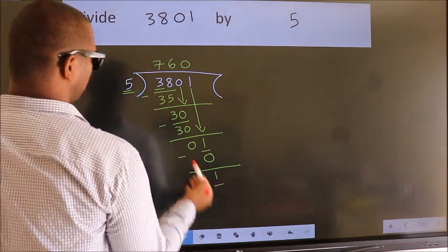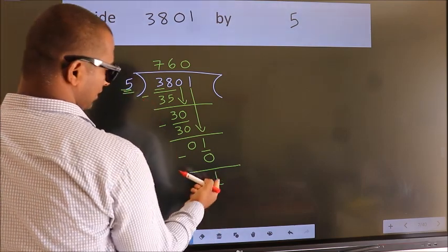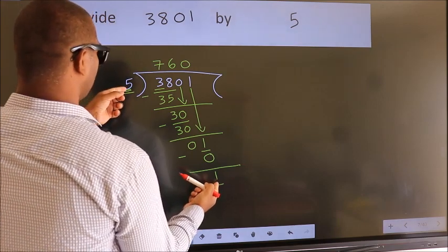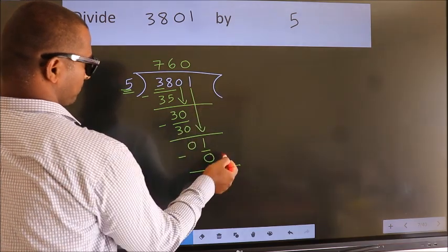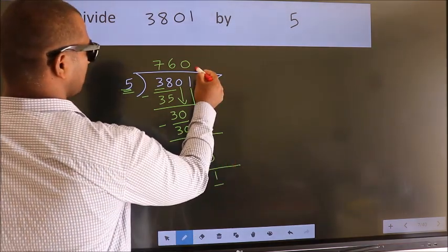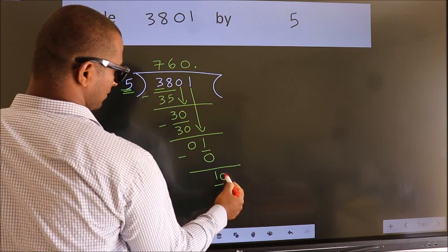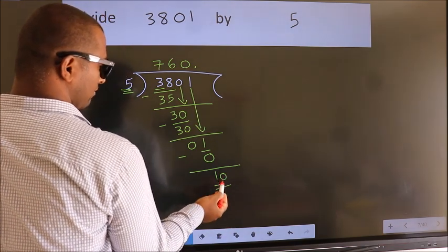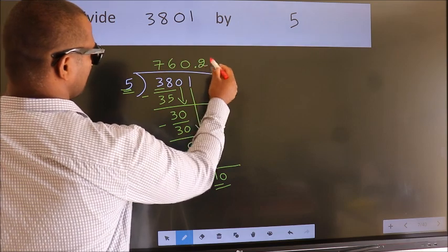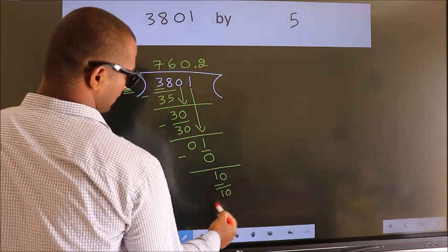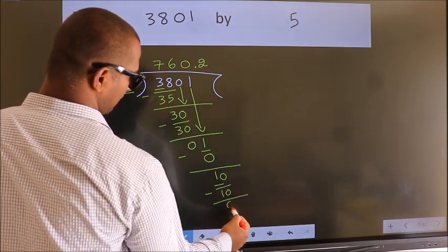Here we have 1. Here 5. 1 smaller than 5. And we did not bring any number down. So now we can put dot take 0. So 10. When do we get 10 in 5 table? 5 times 2 is 10. Now we subtract. We get 0.